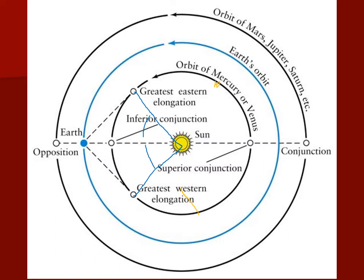Greatest eastern elongation means the planet is east of the sun in the sky, so after the sun sets the planet is still up — you see it in the evening after sunset. Greatest western elongation means the planet is west of the sun, so it sets before the sun but rises before the sun rises — you see it as a morning object. If a table of planetary data says a planet is at greatest eastern elongation, it will be visible in the evening right after sunset. Greatest western elongation means you can see it right before sunrise.